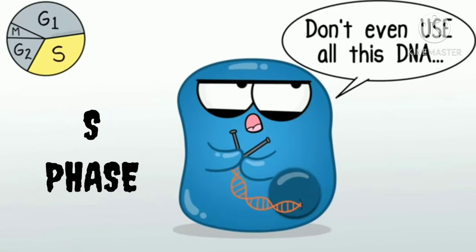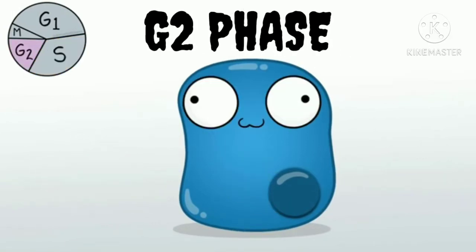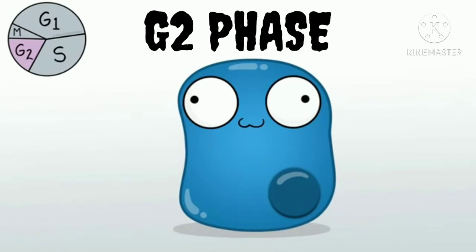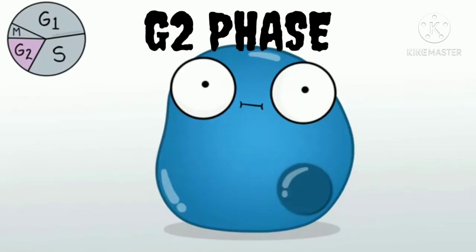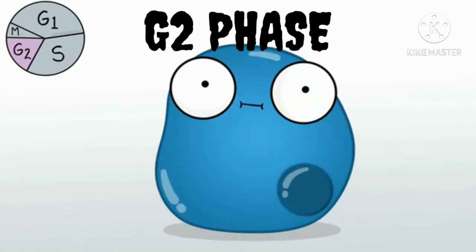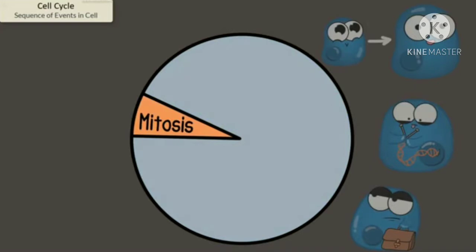In the G2 phase, the cell replenishes its energy stores and synthesizes proteins necessary for chromosome manipulation. Some cell organelles are duplicated and the cytoskeleton is dismantled to provide resources for the mitotic phase. There may be additional cell growth during G2. The final preparations for the mitotic phase must be completed before the cell is able to enter the first stage of mitosis.